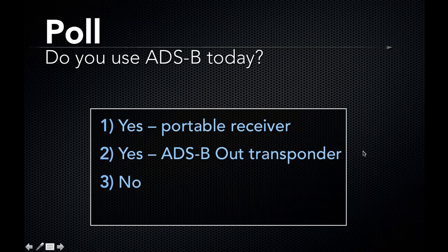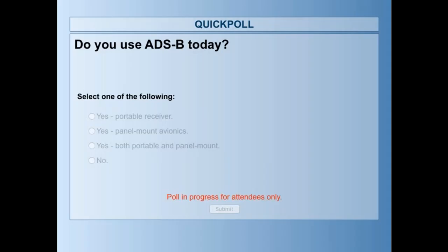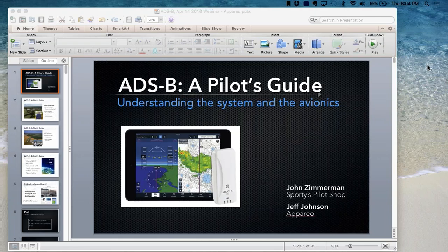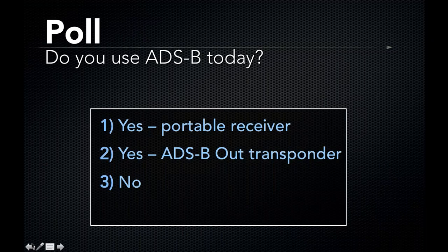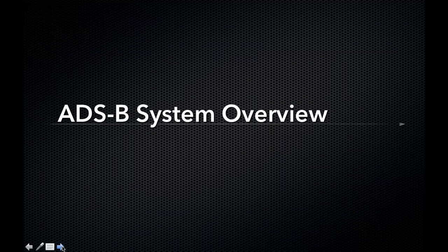We're starting with a quick poll to get a sense of where everyone is with ADS-B. The results are coming in and it looks like the majority of people tonight are not flying with any type of ADS-B. Second would be portable receiver only, then a few folks flying with panel mount, and a few flying with both. We'll have information for all of you tonight, and certainly for those new to the ADS-B world, there's a lot to take away.